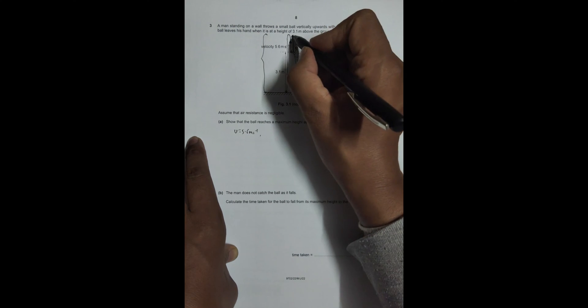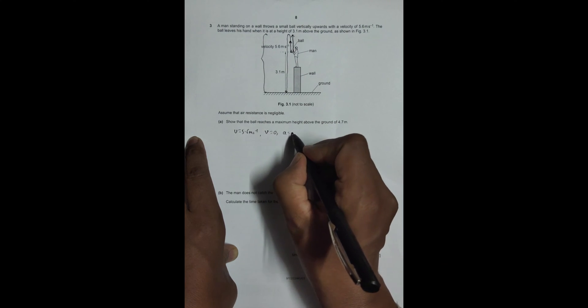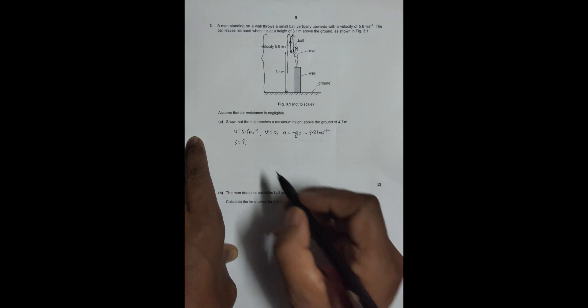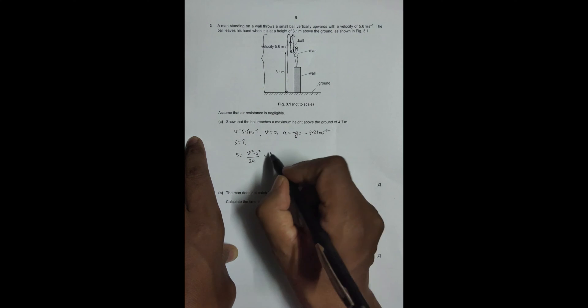The final velocity here, v, is equal to zero. a is equal to negative g, that's equal to minus 9.81 meters per second squared. Now, s is equal to v squared minus u squared divided by twice a. That's equal to zero squared minus 5.6 squared divided by 2 times minus 9.81.